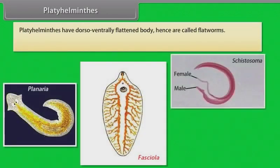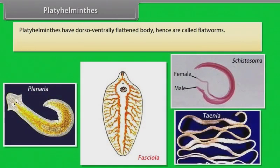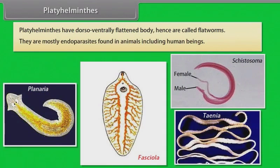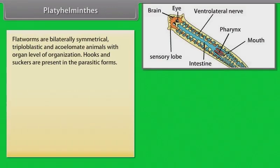Platyhelminthes have dorsoventrally flattened body, hence are called flatworms. Platyhelminthes are mostly endoparasites found in animals including human beings. Flatworms are bilaterally symmetrical, triploblastic and acoelomate animals with organ level of organization. Hooks and suckers are present in the parasitic forms.